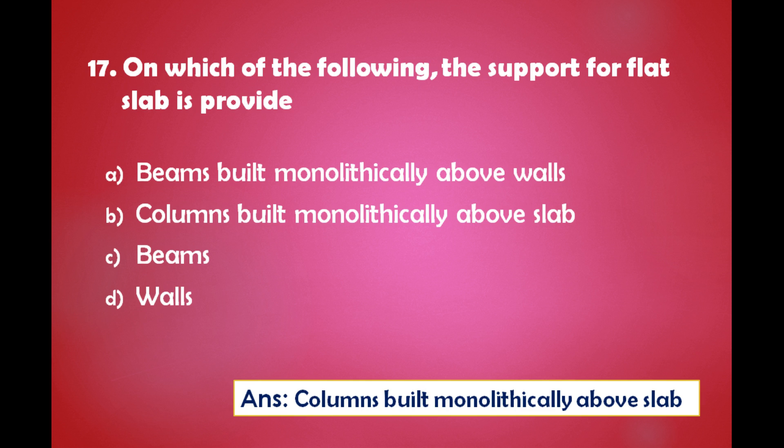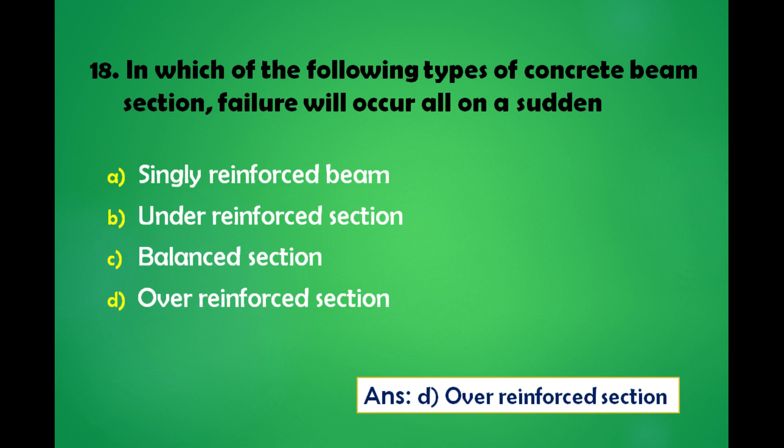On which of the following is the support for flat slab provided? A) Beams built monolithically above walls, B) Columns built monolithically above slab, C) Beams, D) Walls. The answer is: the support for flat slab is provided on columns built monolithically above slab.